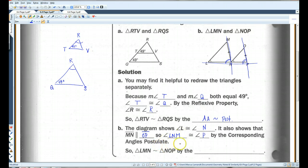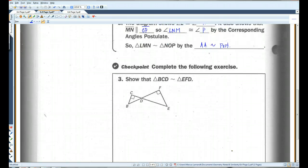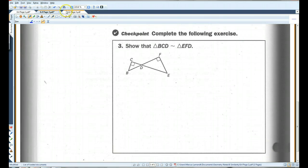So we have two angles. These two triangles are similar by angle-angle similarity. You guys can do the checkpoint. Let's go on to page 3.